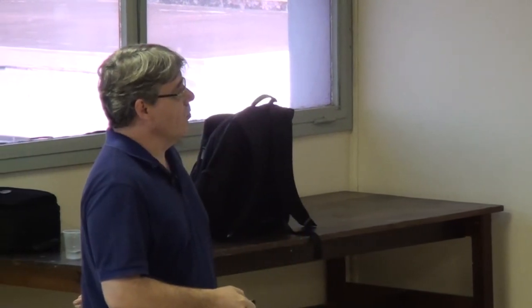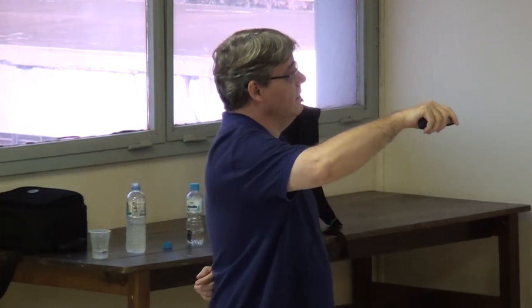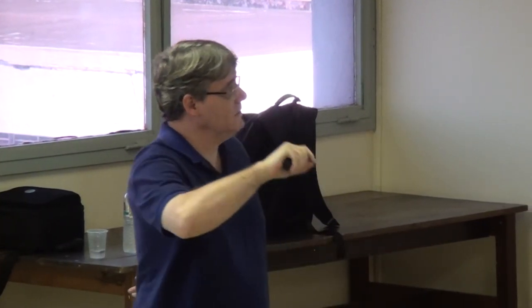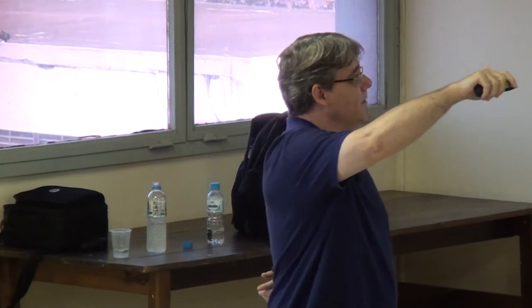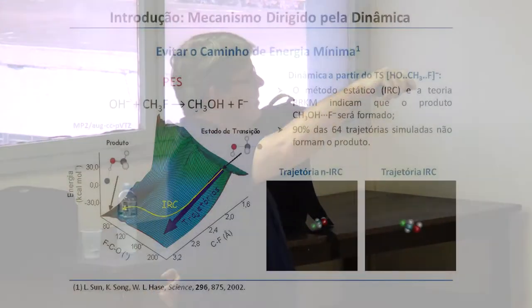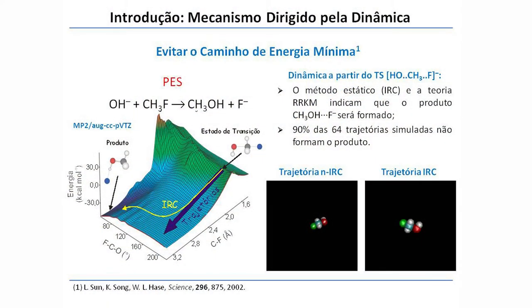Algumas outras reações não seguem aquele caminho de energia mínima, que é o IRC. Um exemplo típico, associado à conservação de momento, é a reação SN2. Nesse caso, é a hidroxila deslocando o flúor do fluorometano. Se você seguir o IRC, esse é o estado de transição, e o caminho IRC leva a um produto em que o fluoreto, estando na presença de uma hidroxila, tende a formar uma ligação de hidrogênio forte.